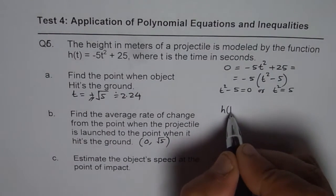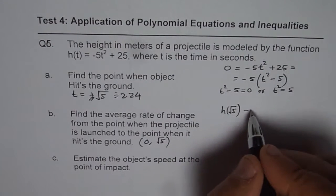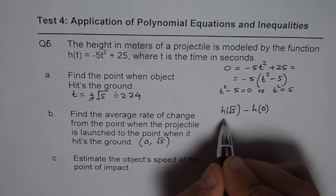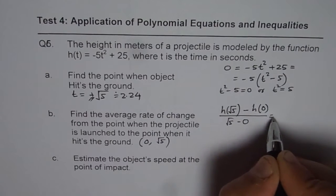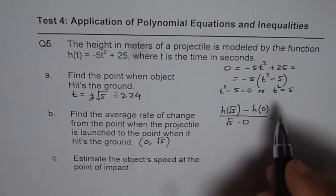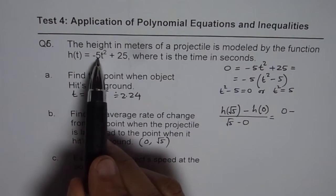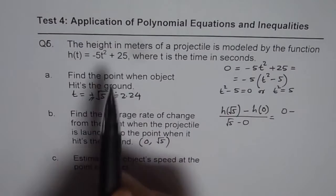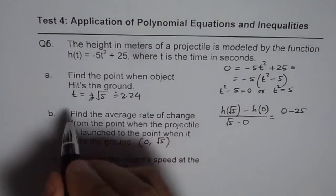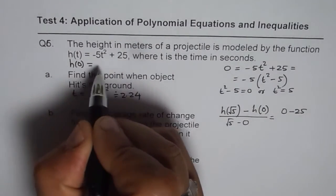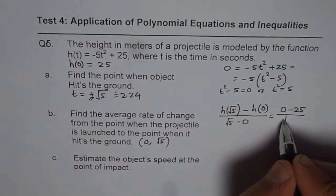So we have to find [h(√5) - h(0)] / (√5 - 0). Now h(√5) is 0, we know it hits the ground, so the height is 0. And when I substitute 0 here, so I get the first term 0 and I get plus 25. So this is -25. h(0), we can say here, h(0) = 25, t squared will be 0, divided by √5.